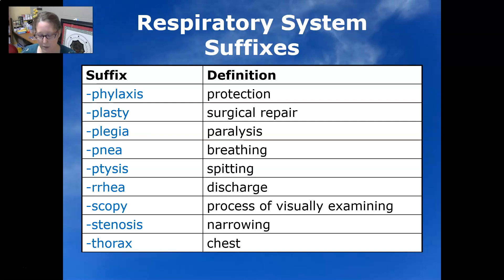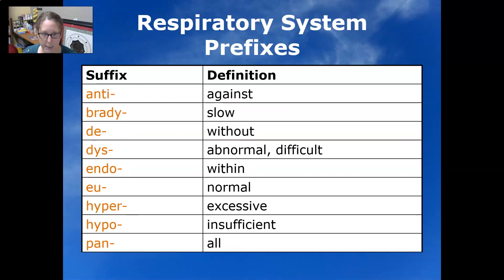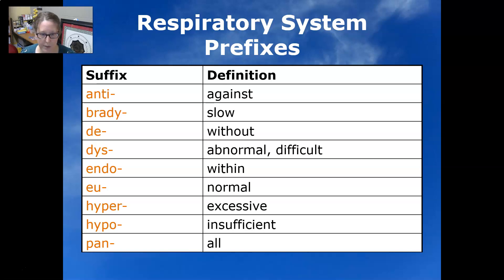Now let's look at some of the prefixes. Anti is against. Brady is slow. A is without. Dys is abnormal or difficult. Endo is within.